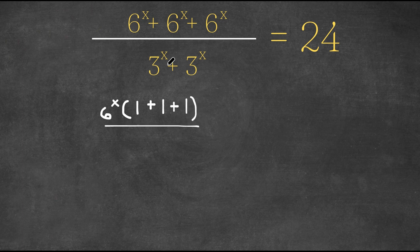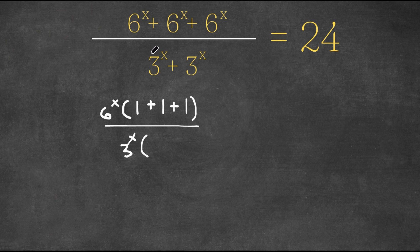And for our denominator here, I'm actually going to factor out 3 to the power of x. So if I factor out 3 to the power of x, I get 3 to the power of x times, 3 to the power of x divided by 3 to the power of x is 1, so we get 1 plus 1.